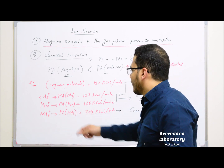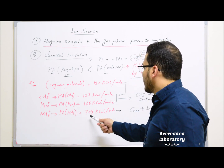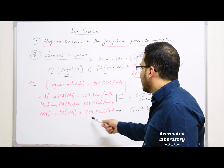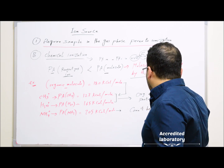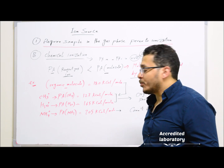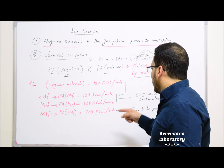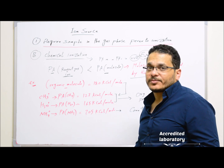However, for NH3, the proton affinity of NH3 is 205 kcal/mol, which is higher than most organic molecules, so molecules cannot be protonated by NH3.